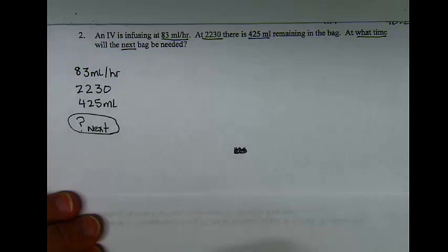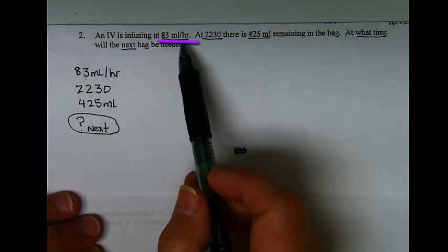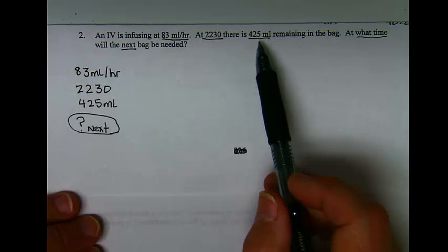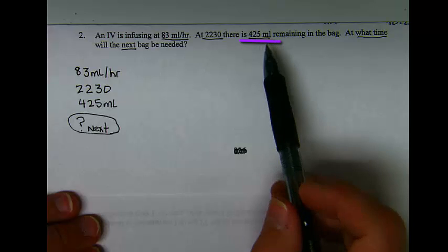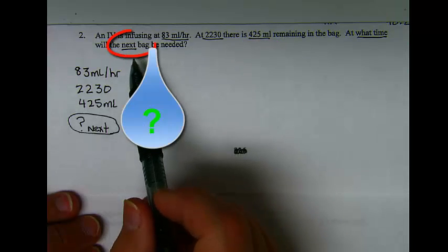Using this next example, an IV infusing at 83 milliliters an hour, at 2230 there's 425 milliliters remaining in the IV bag, and the question is what time will the next bag be needed.